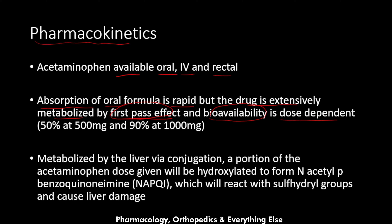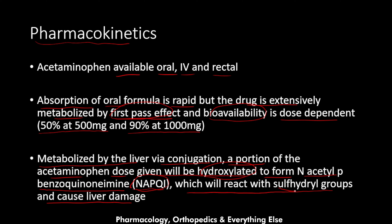The bioavailability is dose-dependent: approximately 50% at 500 mg and 90% at 1000 mg. Acetaminophen is metabolized by the liver via conjugation. However, a portion of the dose is hydroxylated to form N-acetyl-p-benzoquinone imine, abbreviated as NAPQI, which reacts with sulfhydryl groups and causes liver damage. This will be explained further in the adverse effects section.